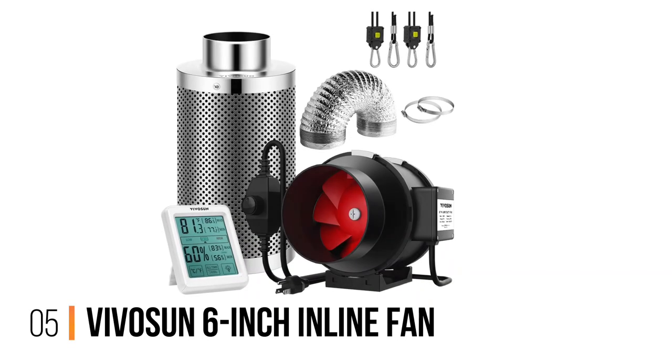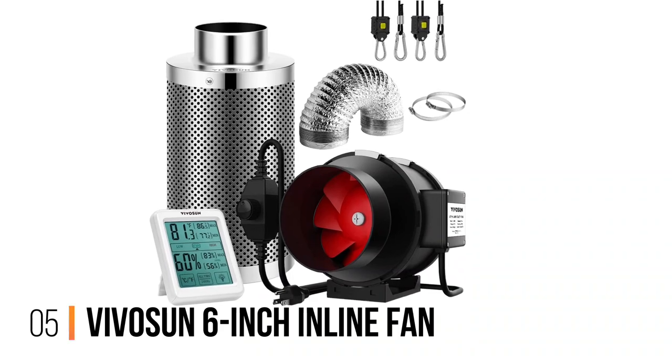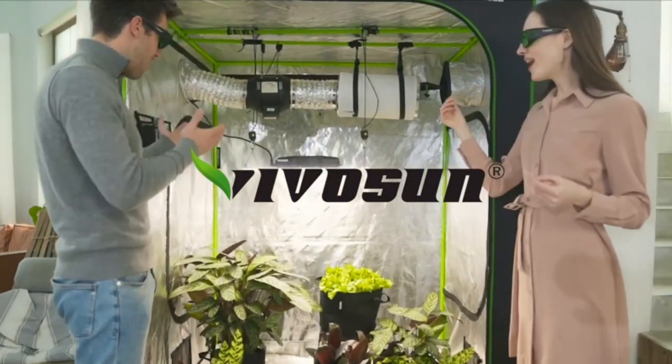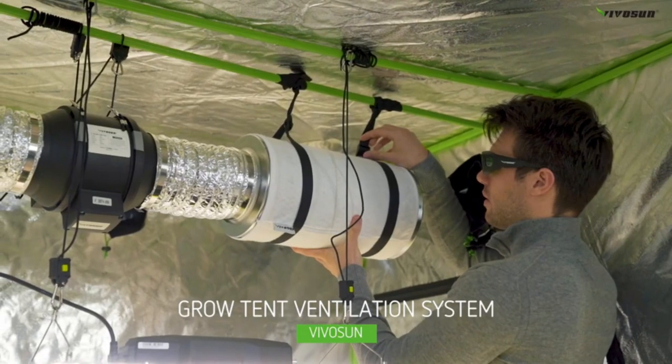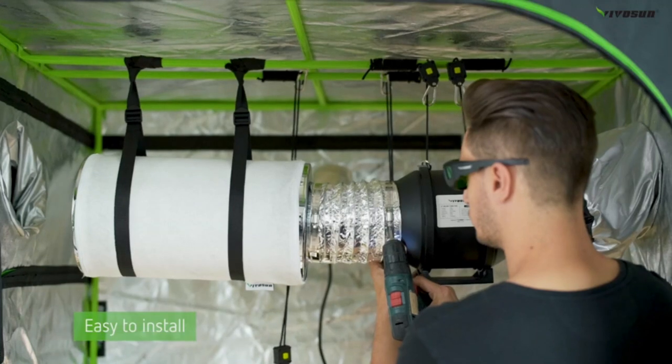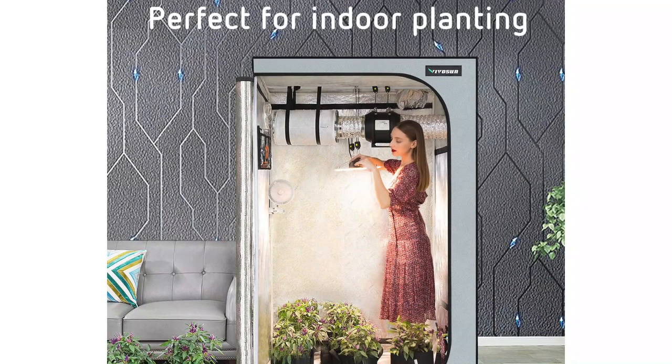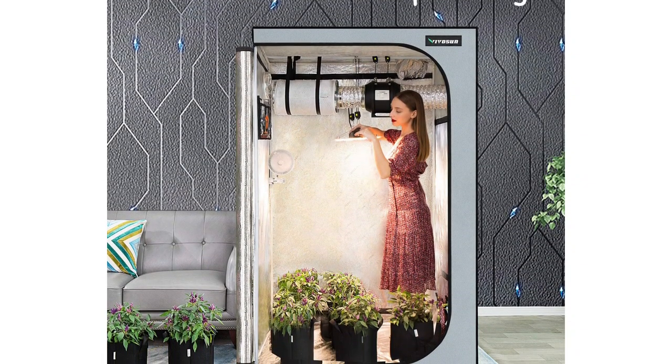Number 5, Vivosun 6-Inch Inline Fan. This is another good quiet exhaust fan for a grow room because it includes all the necessary pieces. You get the fan, a carbon filter, humidity sensor, and 8 feet of ducting. The inline duct fan has an airflow of 390 CFM, which will be fine for smaller grow setups.